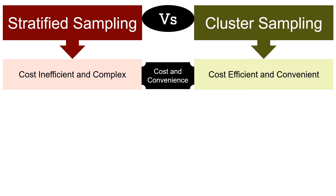When it comes to cost and convenience, cluster sampling is better. Compared to strata in stratified sampling, clusters can be obtained more easily and the focus of study remains on the cluster instead of the whole population, which reduces the overall cost involved.